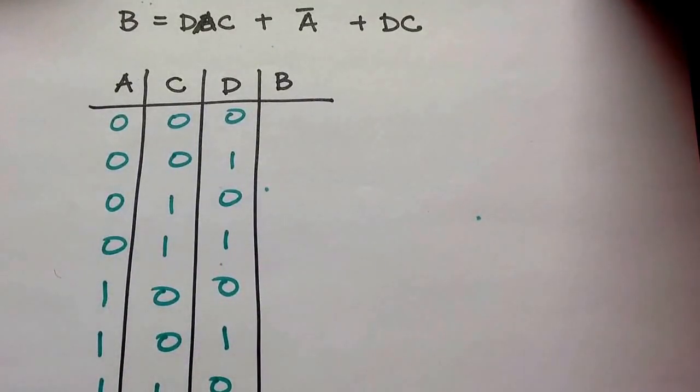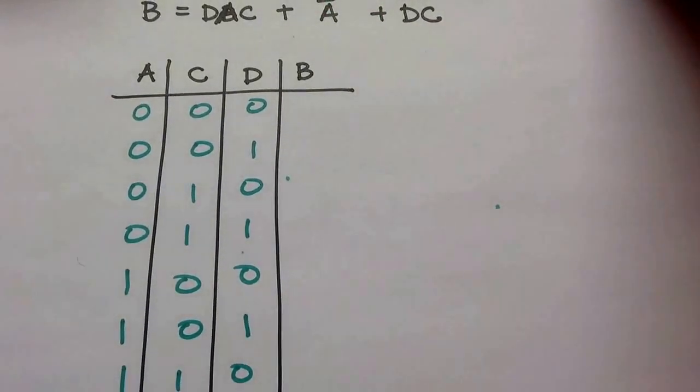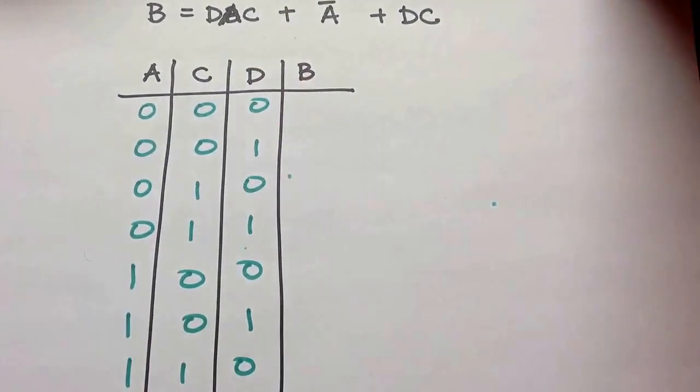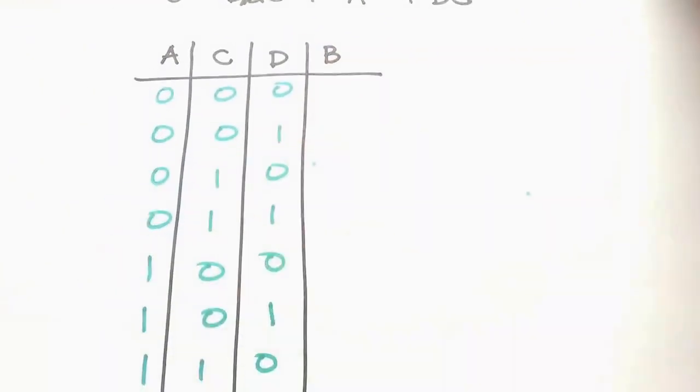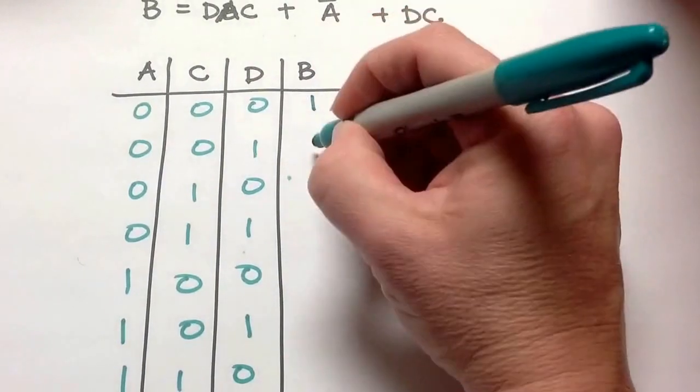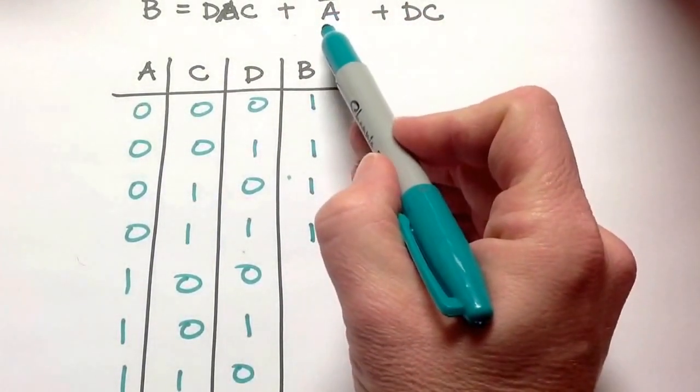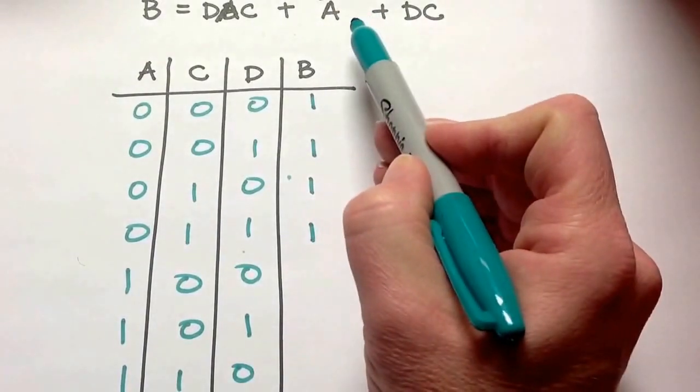So I have D and A and C, or not A. Anywhere I have not A, well, all four rows are not A, the first top four. So 1, 2, 3, 4. Because what this term says is not A, I don't care what C and D are.